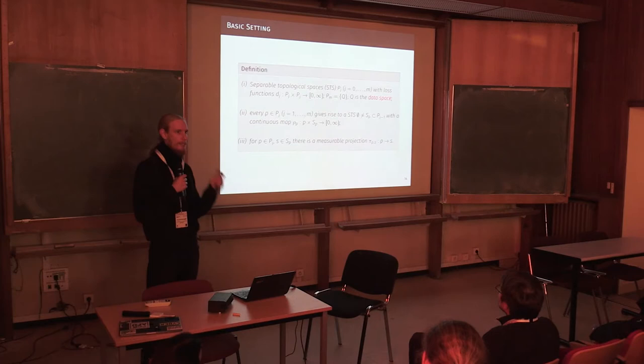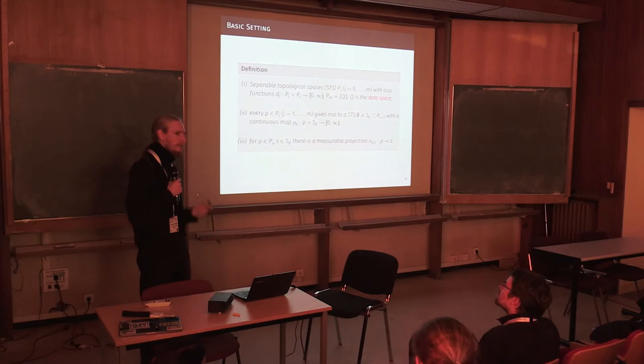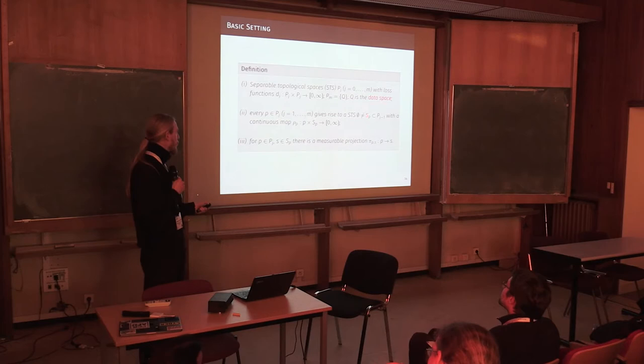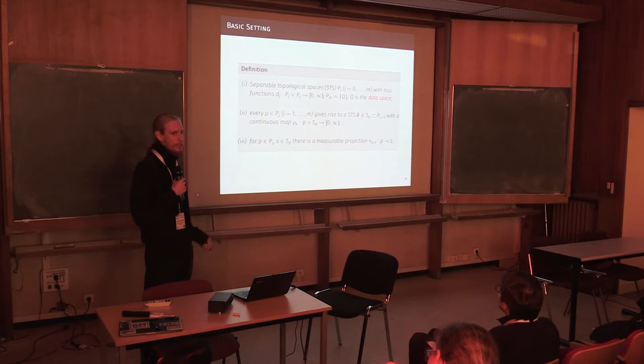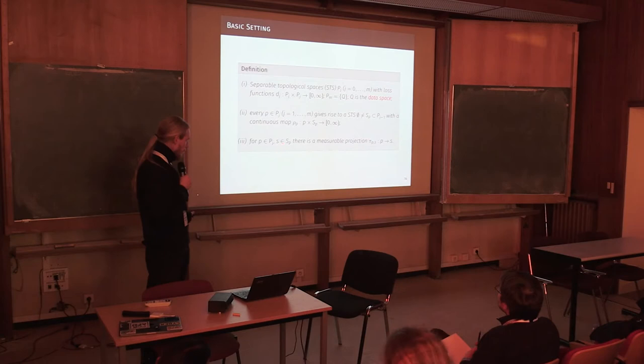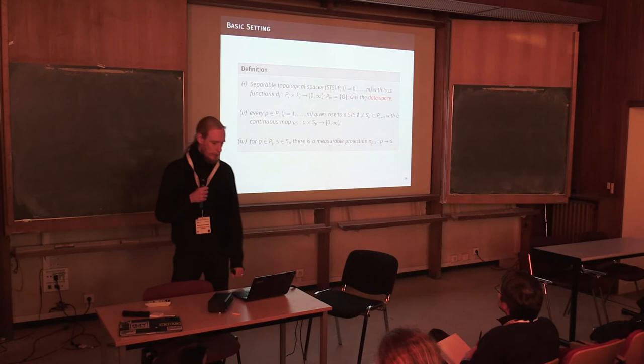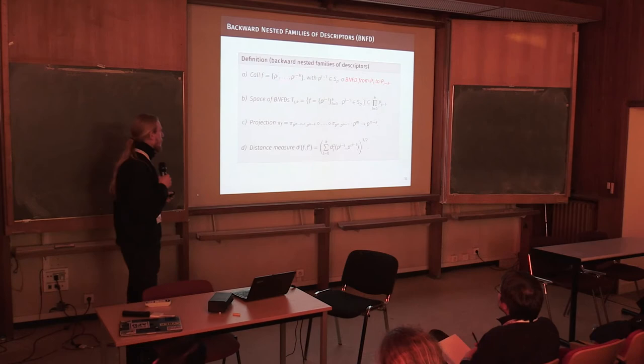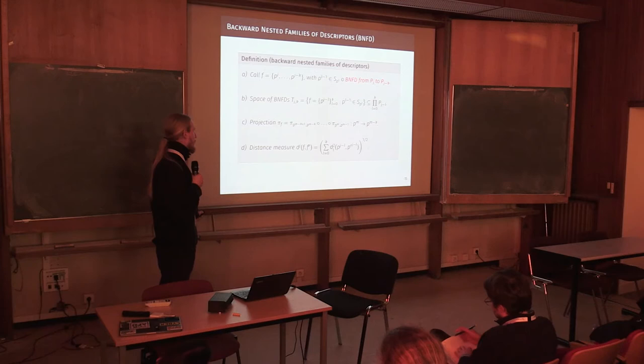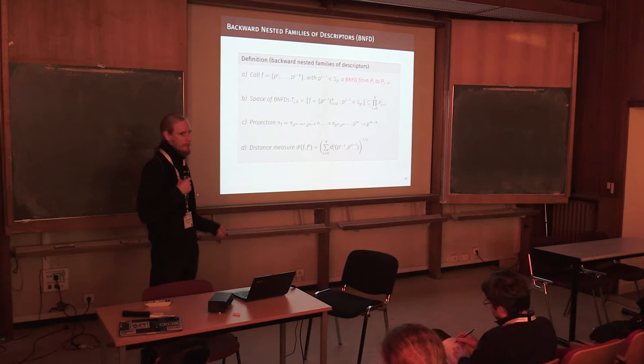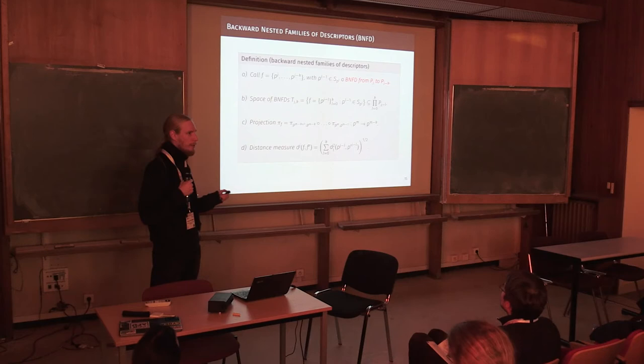also to a subspace of the following parameter space. So once we have fixed an S6, we can no longer get every S5. Because this S5 needs to be nested in the first round S6, right? And this is what I mean by this structure here. We call such a sequence of subspaces, of nested subspaces, a backward nested family of descriptors. We choose descriptor instead of parameter here, because one could do parametric models, and then we are in a world of hurt.